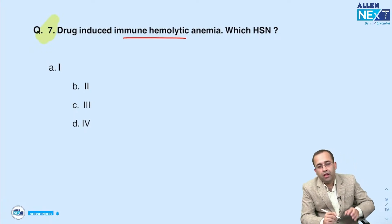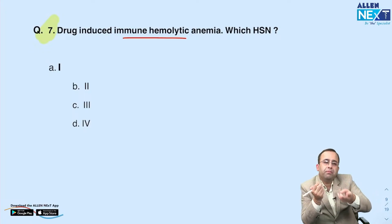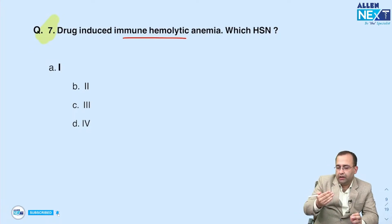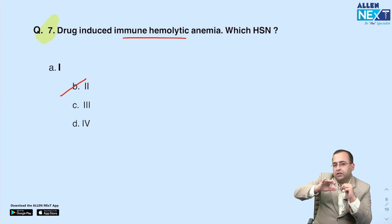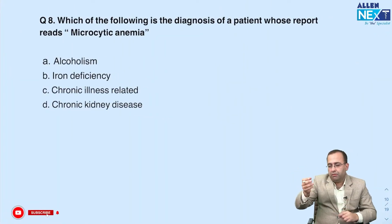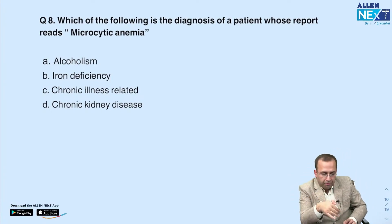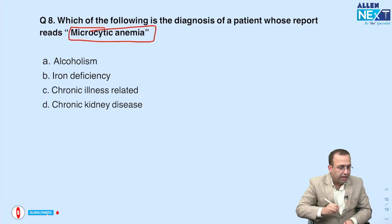Immune hemolytic anemia: there are four types of hypersensitivity. Type 1 is allergy/asthma; type 2 is antibody-mediated hypersensitivity. The minute 'immune' is mentioned, it is antibody-mediated — the answer is type 2. Previously they used to give a history of a young female getting a bee sting, which is type 1 hypersensitivity, with histamine as the main mediator. This time it was immune-mediated — type 2.